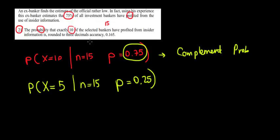Because we cannot use the 75% data directly, we use the complement. Instead of 10 people at 75%, we're using the remaining 5 who did not profit, with the expectation that 25% did not profit.